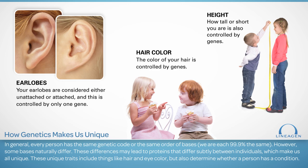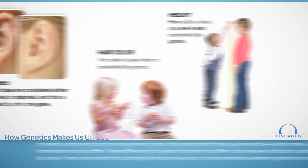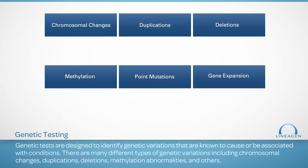For example, there may be variations in genes that provide altered instructions for the creation of collagen, which could lead to brittle bone disease. Or, there may be variations in the genes that provide instructions for the creation of insulin, which could lead to a higher risk for diabetes. Genetic tests are designed to identify genetic variations that are known to cause or be associated with medical conditions.